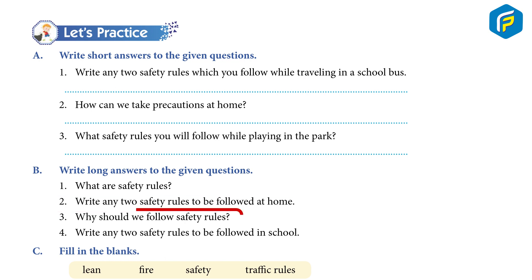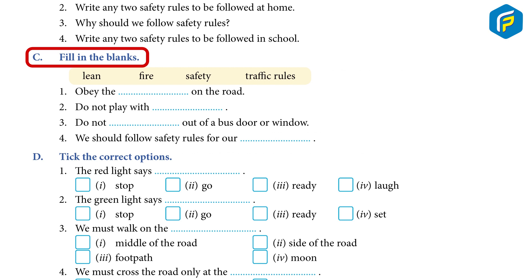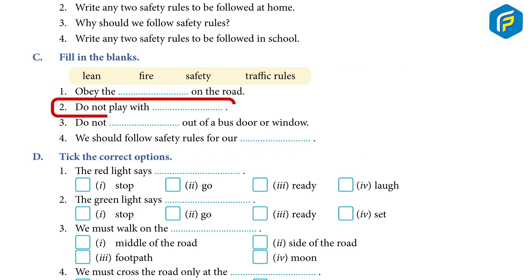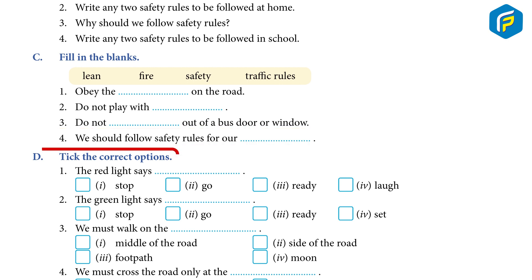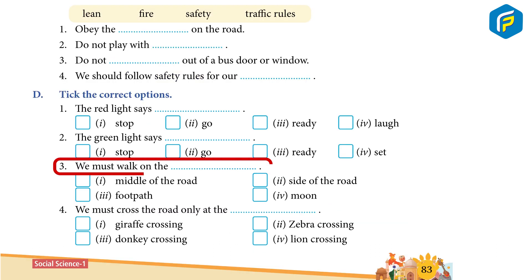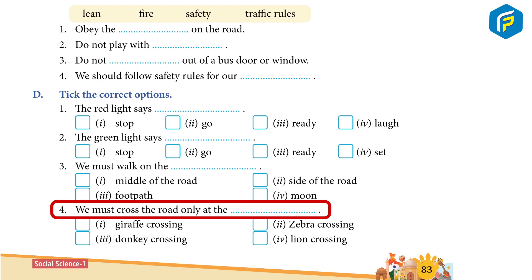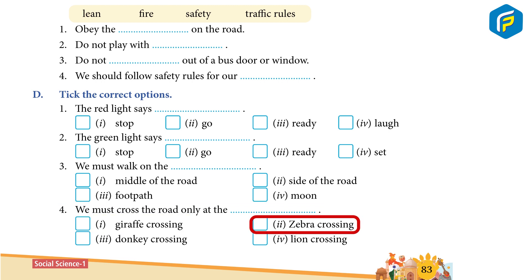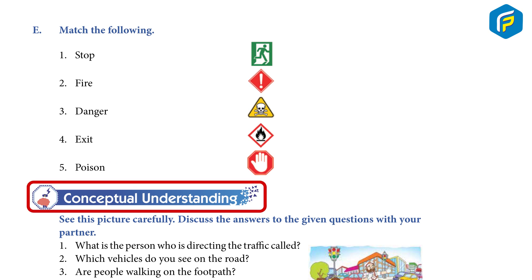C) Fill in the blanks: One, obey the ___ on the road. Two, do not play with ___. Three, do not ___ out of a bus door or window. Four, we should follow safety rules for our ___. D) Tick the correct options: One, the red light says ___: stop / go / ready. Two, the green light says ___: stop / go / ready. Three, we must walk on the ___: middle of the road / side of the road / footpath. Four, we must cross the road only at the ___: zebra crossing / giraffe crossing / donkey crossing. E) Match the following: stop, fire, danger, exit, poison.